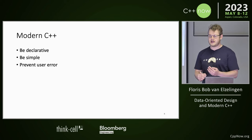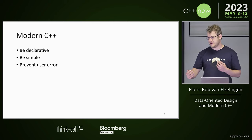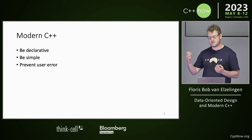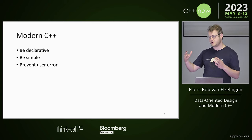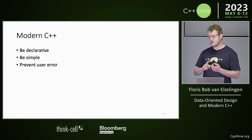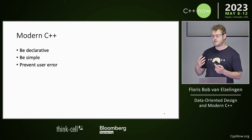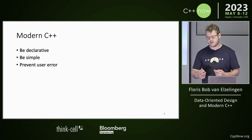When it comes down to it, what are the goals of modern C++? We want to be declarative — think of the SDL. We want to have names. We want to do things right. We want to be simple. We want to use value types and actually minimize side effects. This is not the object orientation we used to know. We want to prevent user error by using strong types.